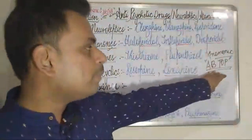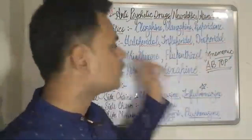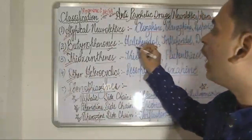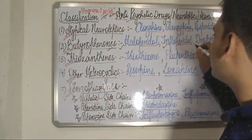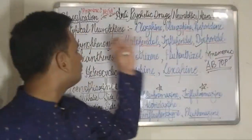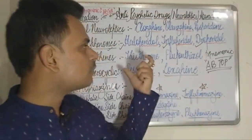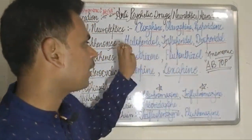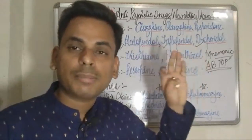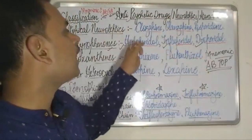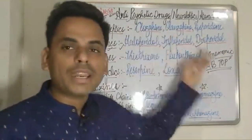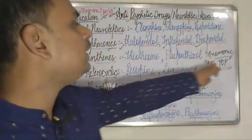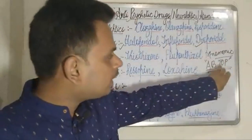The B of ABTOP refers to the butyrophenones. The famous drugs under this category are haloperidol, trifluperidol, and droperidol. The butyrophenones can be easily remembered because these three drugs all have the suffix '-peridol' — haloperidol, trifluperidol, and droperidol.